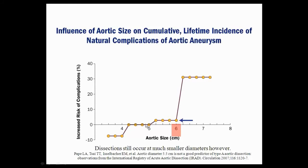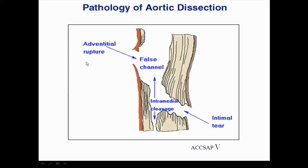This slide shows size and risk of rupture for chronic aortic aneurysms. When aneurysms exceed 6 cm, the risk of complications goes up significantly — that's why we try to repair people at that point. For Marfan syndrome or other genetic abnormalities, we recommend replacing the root at 5 cm instead of 5.5 cm. A dissection is literally a dissection between the tissue planes of the intima and the media.